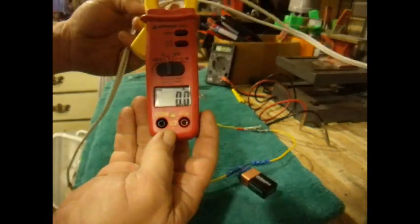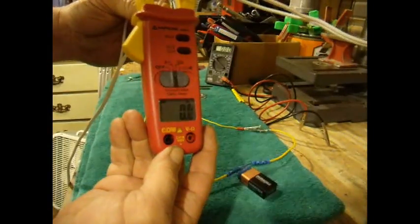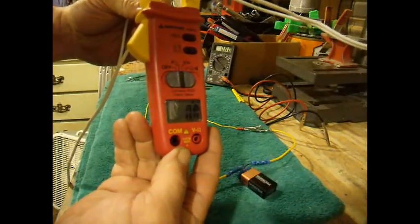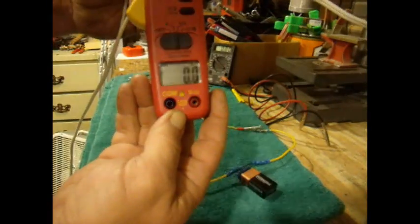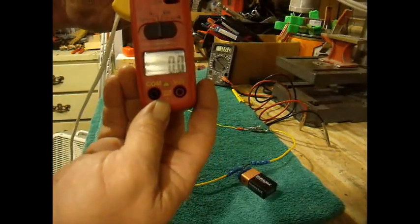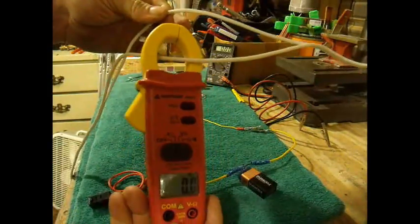When there's electrons passing through it, there's a magnetic field produced by that current. As you can see, there's nothing turned on, so there's no electricity and there's no magnetic field.